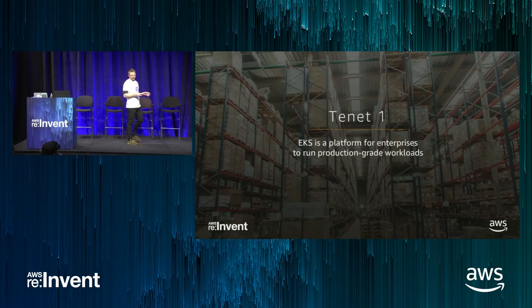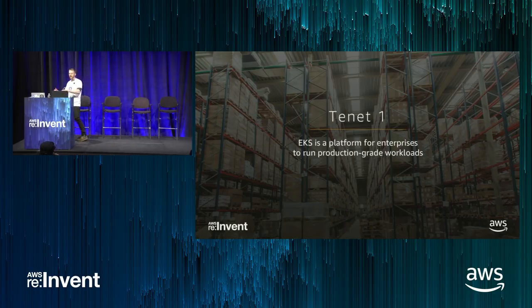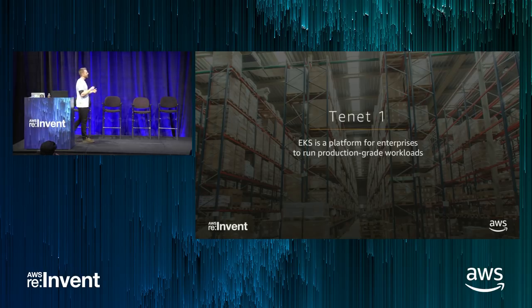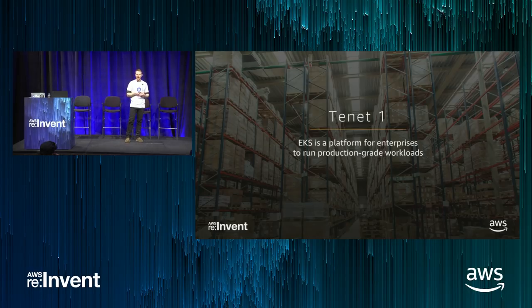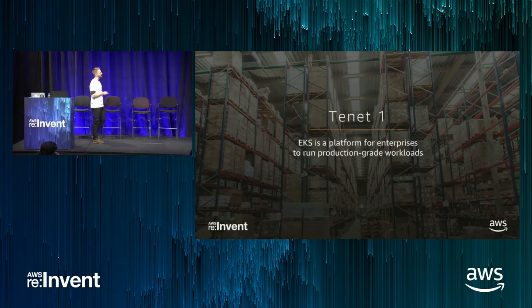Tenant one: EKS is a platform for enterprises to run production-grade workloads. We've had some of the largest and most innovative companies in the world as customers giving us feedback on what they need a Kubernetes service to do for them. All of this feedback is part of the EKS design. We aim to provide features and management capabilities to allow enterprises to run real workloads at real scale — reliability, visibility, scalability, and ease of management are our priorities.